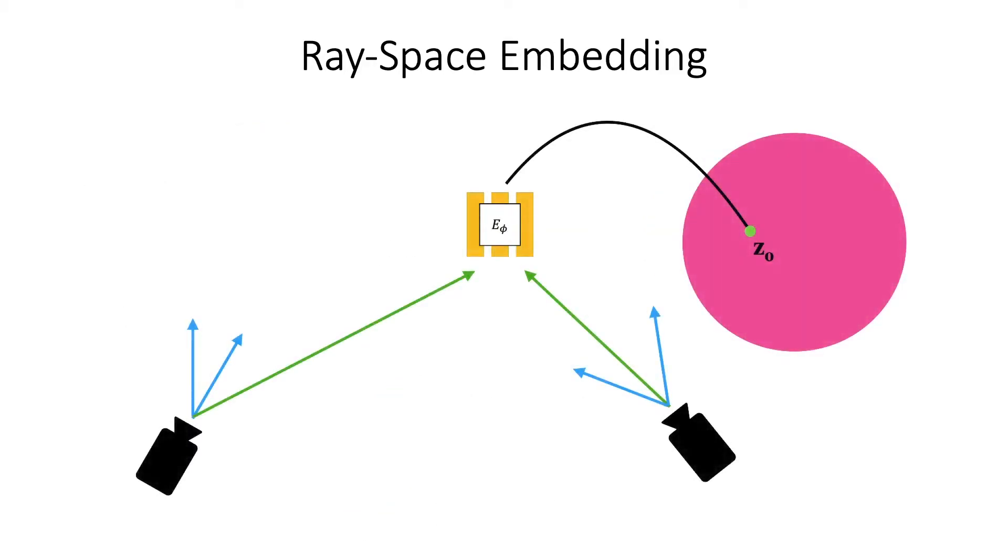More specifically, an embedding network should send training rays that observe the same 3D point to the same location in some latent space. It should also produce an interpolable latent space, such that rays that are not present in the input that observe the same 3D point also map to the same location in the latent space.